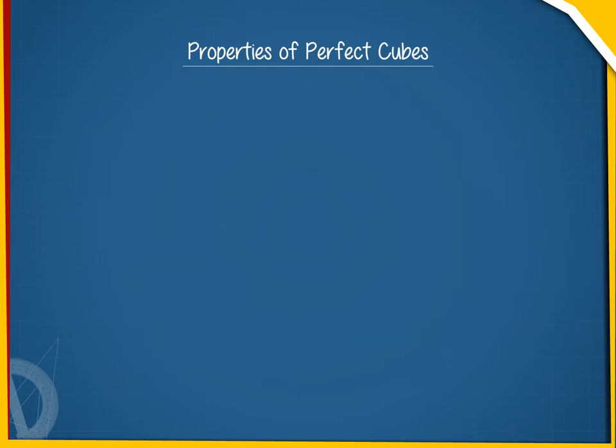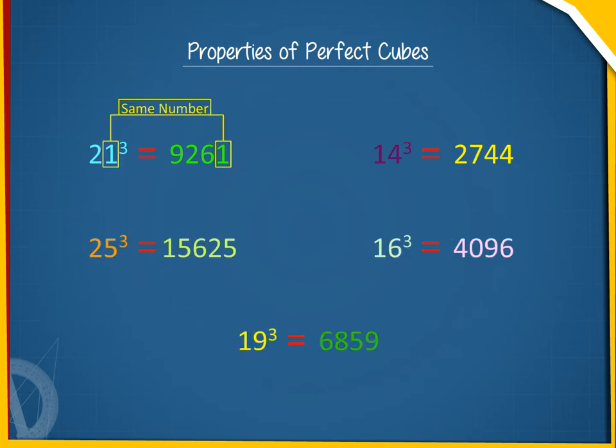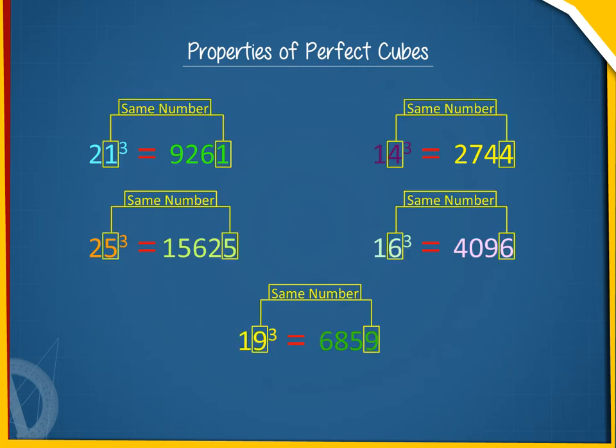Property 2: The cube of a number ending with 1, 4, 5, 6, or 9 also ends with the same digit — 1, 4, 5, 6, or 9 respectively.